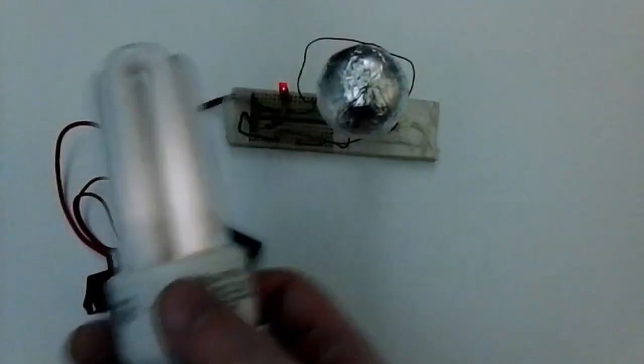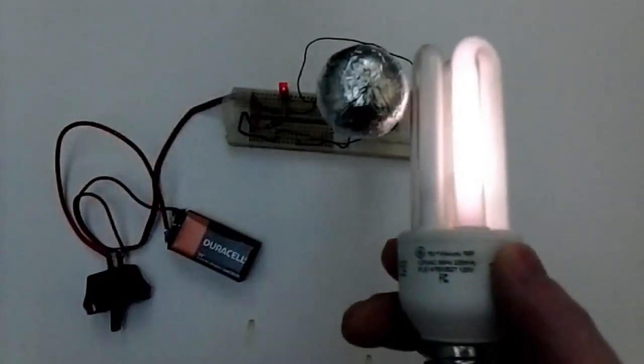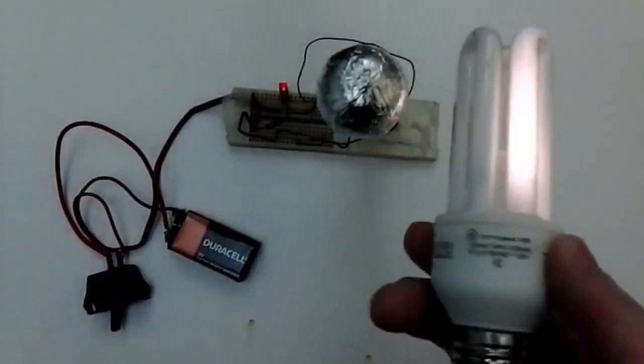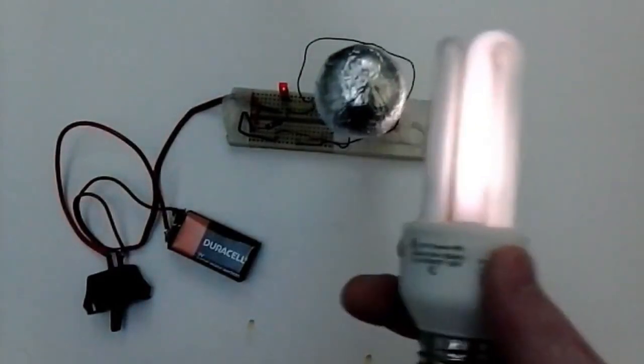To prove the bulb isn't being powered by an AC outlet, I've tried to fully show the screw base whenever possible. My coil probably isn't as powerful as it could be, which is why some parts of the bulb aren't as easily lit.